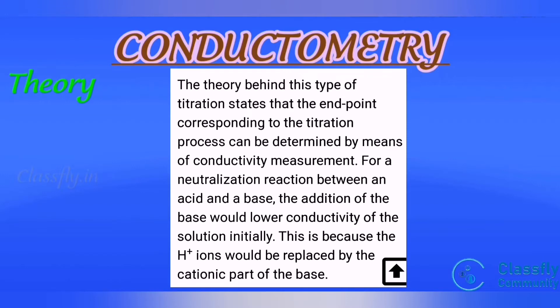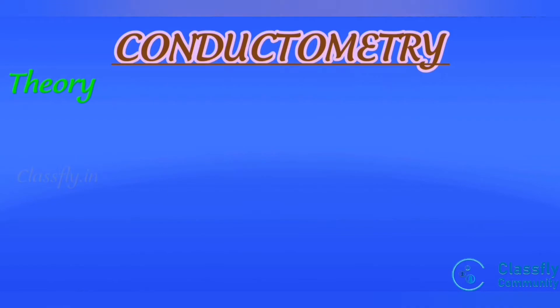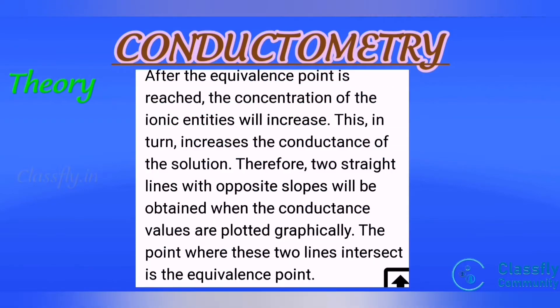After the equivalence point is reached, the concentration of the ionic entities will increase. This in turn increases the conductance of the solution. Therefore, two straight lines with opposite slope will be obtained when the conductance values are plotted graphically. The point where these two lines intersect is equivalence point.